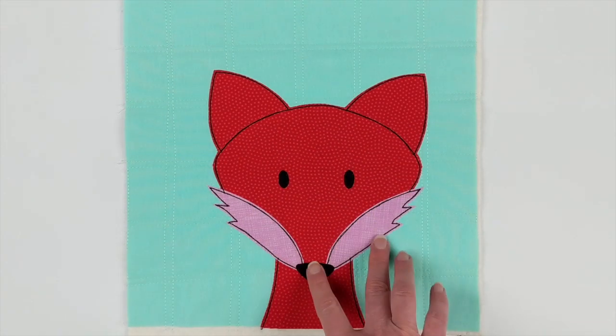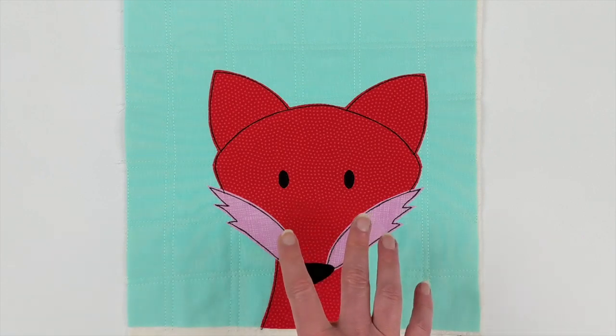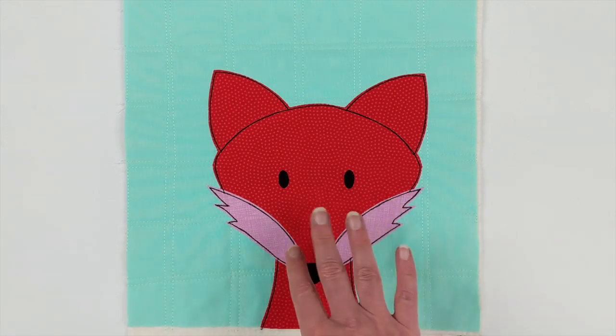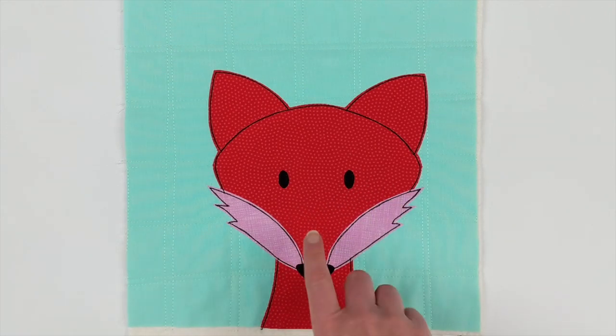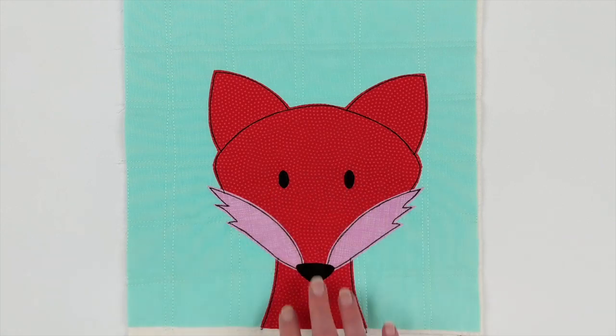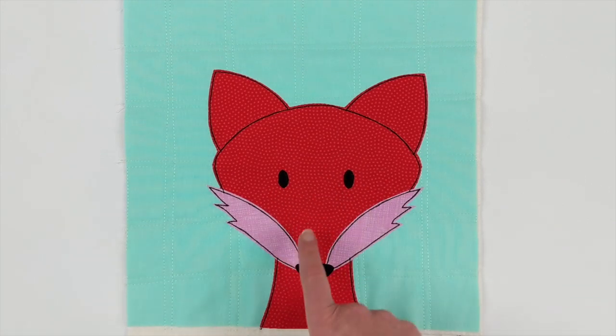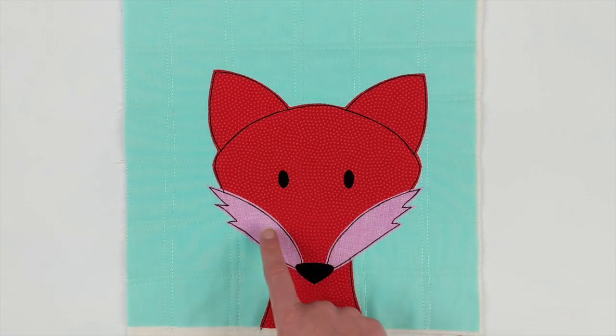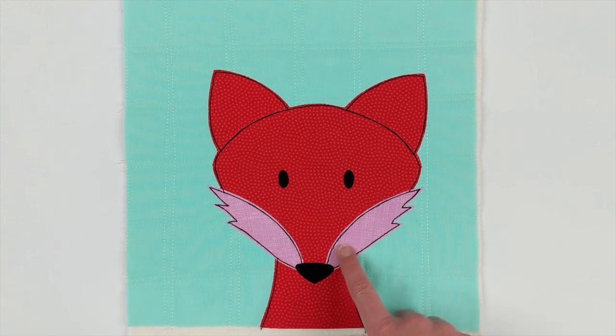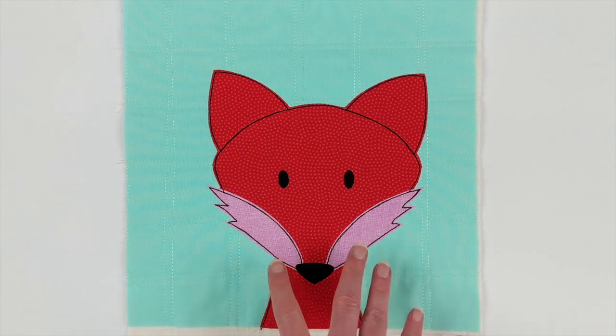Actually come from the rainbow brights fabric bundle that has a dark and a light shade of each color of the rainbow. You could totally do fox in purple or blue or green. You just want to make sure to choose the lighter color for these whiskery pieces. And that's going to still make him look like a fox.